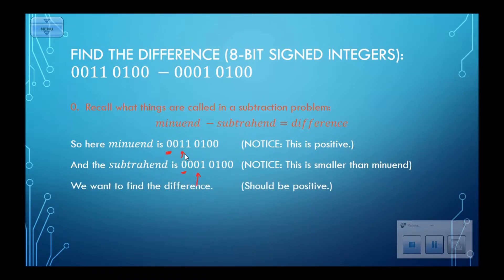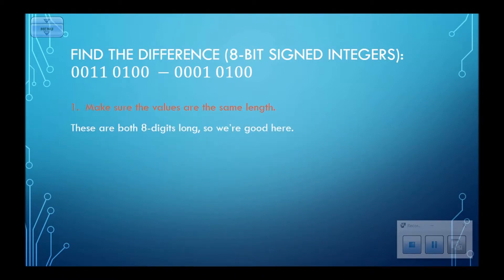We want to find the difference. This difference should be positive. I'm taking a number and subtracting a smaller number. I should get something positive. Make sure the values are the same length. They are. They're both 8-bit signed integers.